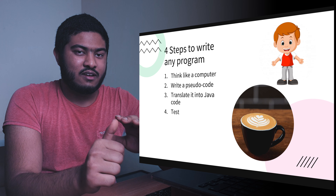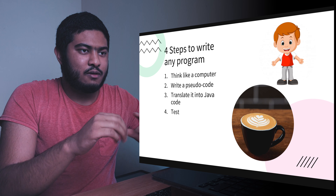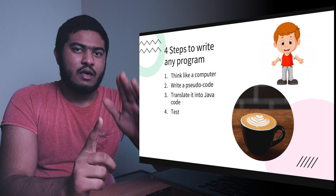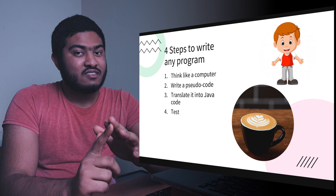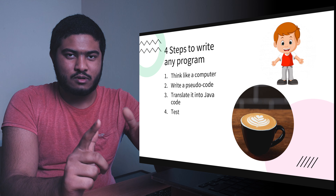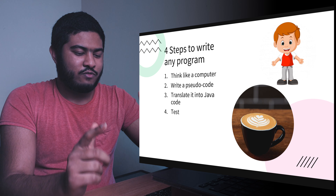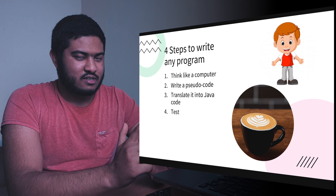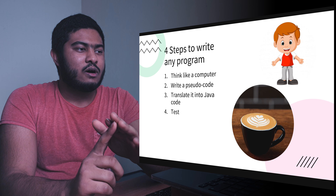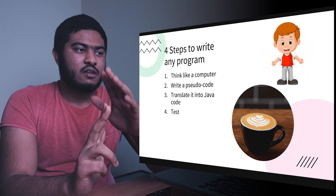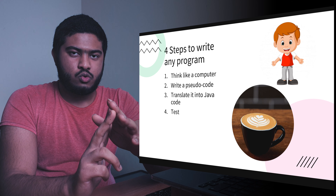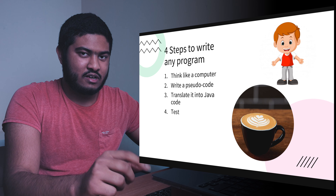You have to guide the computer and tell it what to do and it will follow. The second step is writing pseudocode. Pseudocode might seem like a fancy word but it's not — pseudocode just means writing in plain, simple English, very short and easy to understand. The third step is translating it into Java code.